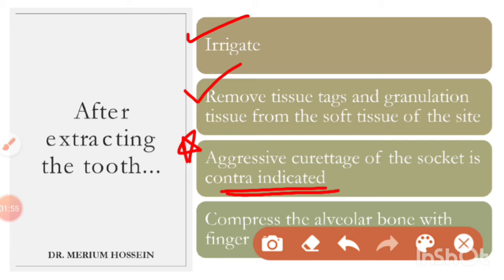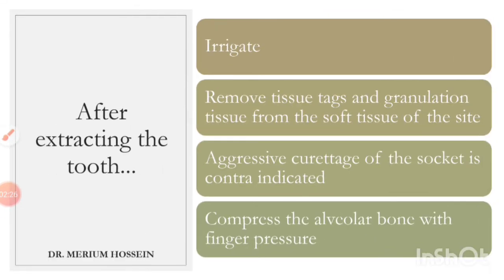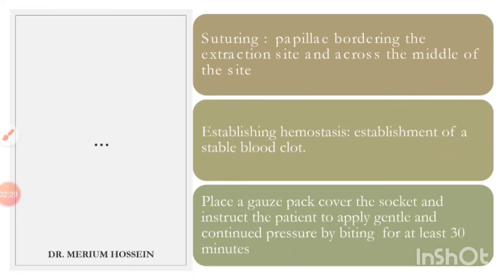The next step — which is often forgotten after extraction — is to apply pressure onto the buccal and lingual sides, compressing the buccal and lingual plates. If we do not do this, an undercut can form in that area during healing, which may interfere with prosthesis placement later.